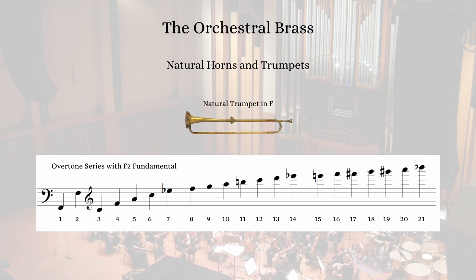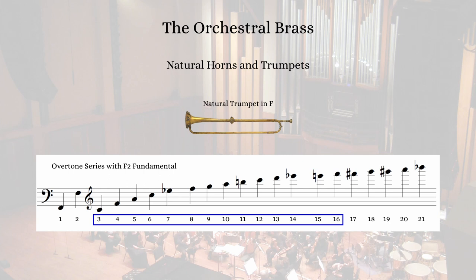The fundamental, also known as the pedal tone, of the Baroque F trumpet was F2, but the typical playing range was roughly between the 3rd through the 16th partials. The pedal tone and the first overtone are always more difficult to play, and notes above the 16th partial are possible but more difficult. As you can see here, diatonic scales are very much a possibility, with a few necessary adjustments in pitch, most notably with the 11th harmonic.